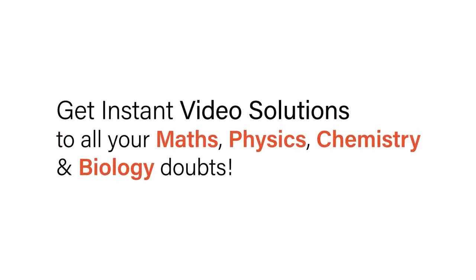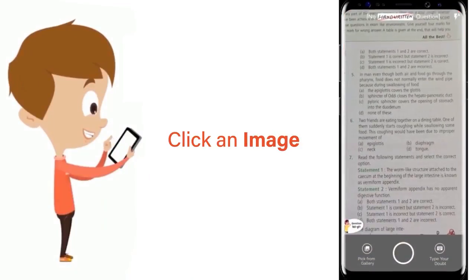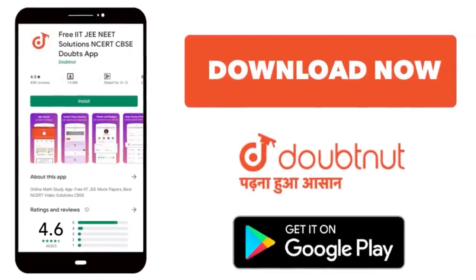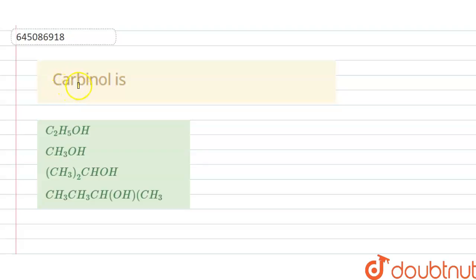With Doubtnet, get instant video solutions to all your maths, physics, chemistry, and biology doubts. Just click the image of the question, crop the question, and get instant video solution. Download Doubtnet app today. Hello students, today our question is carbinol is A, B, C, D. Options are given here.